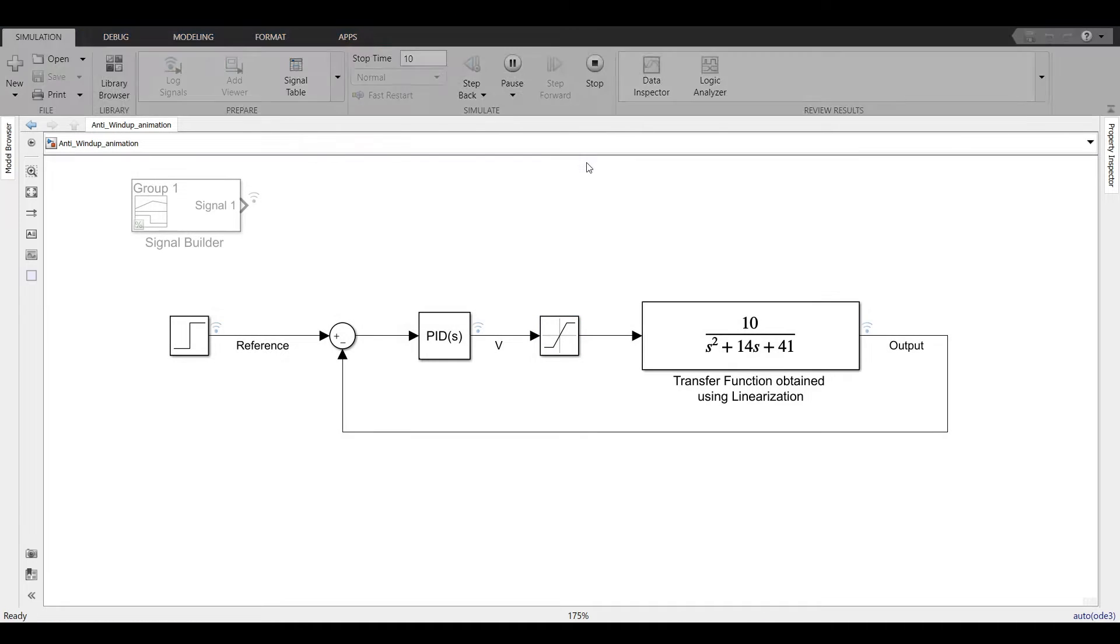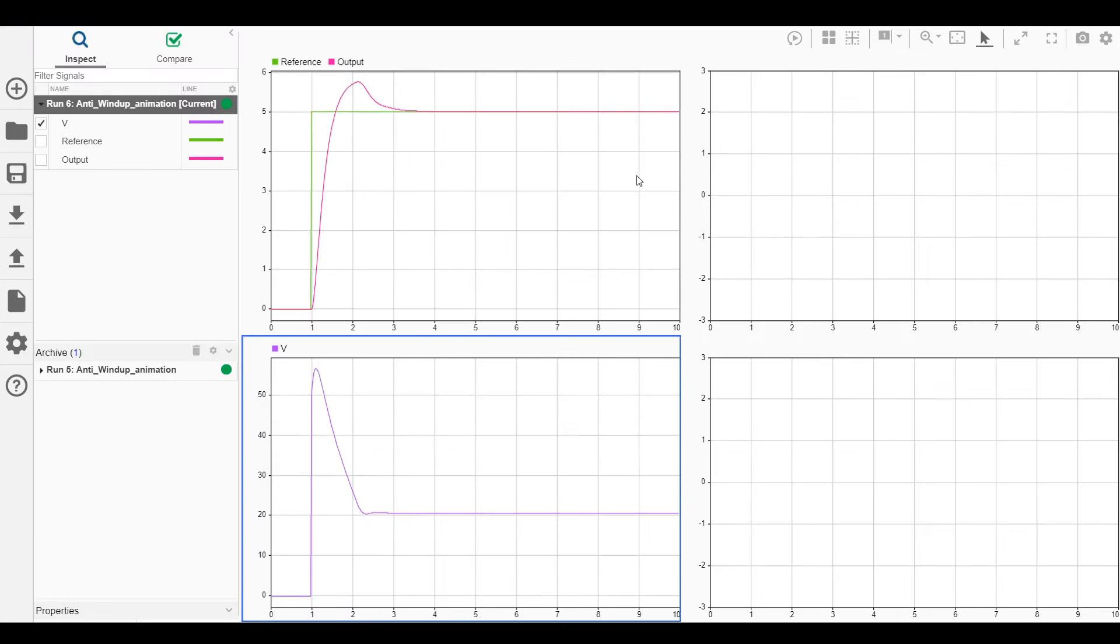Now, let us see the response. Oh, we have more overshoot now compared to the previous case. But we designed a controller to have very little overshoot. So what just happened?